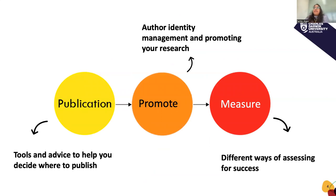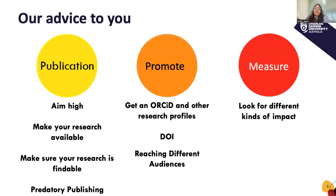So we're going to be talking about publication, promote, and measure. We're going to give you tools and advice to help you decide where to publish, your author identity management, and different ways for assessing for success. We'll be talking about aiming high, making your research available and findable, and we're also going to touch on predatory publishing, as well as ORCIDs, DOIs, reaching different audiences, and looking for different kinds of impact.